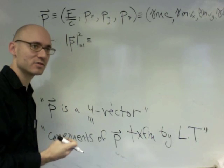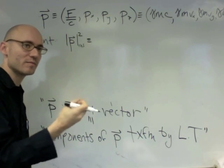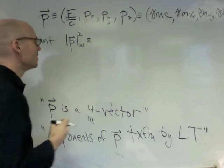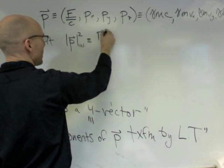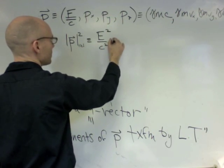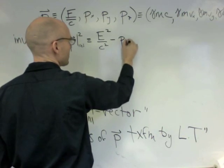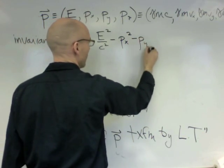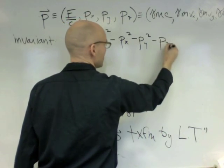This is going to be defined to be the time component squared minus the space component squared, just like the interval was the time squared minus the position squared. So this will be E squared over C squared minus Px squared minus Py squared minus Pz squared.